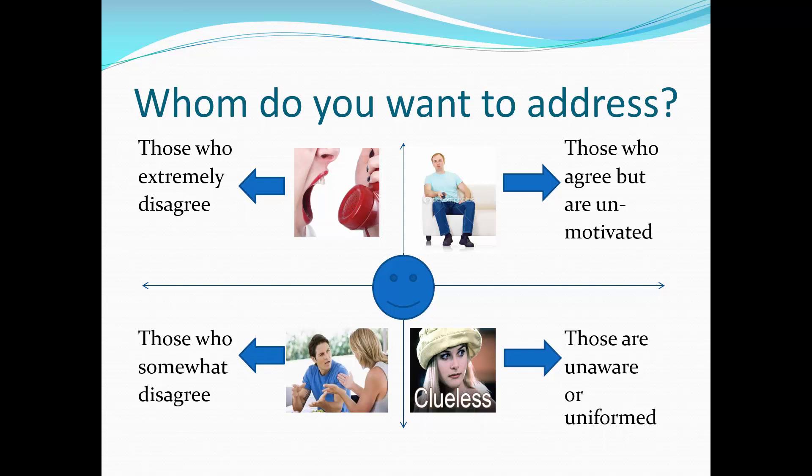When you figure out whom you want to address, there's a spectrum to think about. You want to think about people who agree with you but are unmotivated. Make sure you include that 'but are unmotivated' part, because if you pick people who already agree with you, what's the sense in writing the paper? You're preaching to the choir — there's no reason to write this paper.